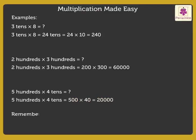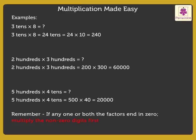Kids, always remember while multiplying: if any one or both the factors end in zero, multiply the non-zero digits first, and then insert as many zeros as there are in the two factors.